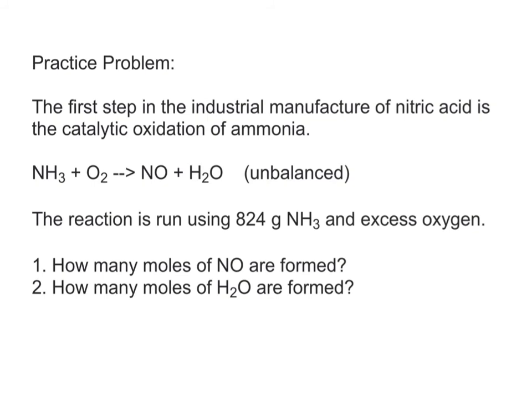The first step in the industrial manufacture of nitric acid is the catalytic oxidation of ammonia. The unbalanced chemical equation is provided for you. Remember, the first step to solving stoichiometry problems is to make sure that your equation is balanced. So balance your equation before you move on. The reaction is run using 824 grams of ammonia and excess oxygen. Find out how many moles of nitrogen oxide are formed, and how many moles of water are formed. Write your answer at the end of your notes, and show your notes to Mrs. Benke.